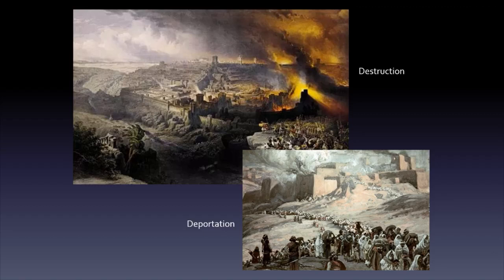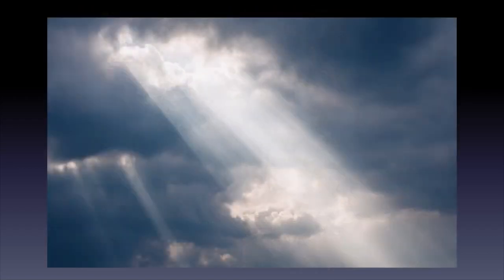No longer called Israelites, the people were now called Jews. They were on the brink of extinction, and their situation could not be more desperate. But God never gave up on his people. He was going to restore them, restore their relationship with him, restore their cities and temple, and eventually bring forth a descendant of King David to save the world. Ezra and Nehemiah is the story of how God made good on his promises.